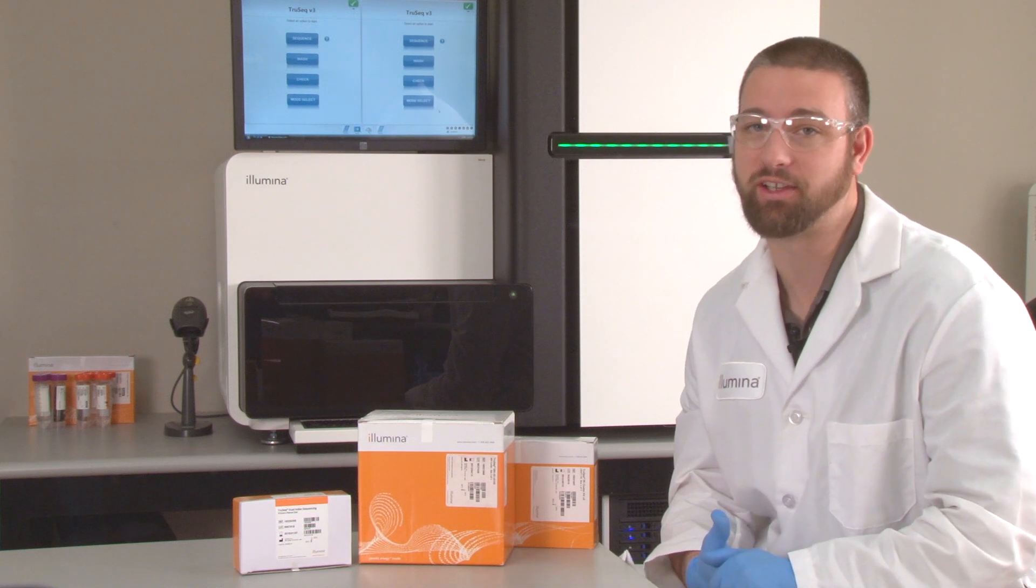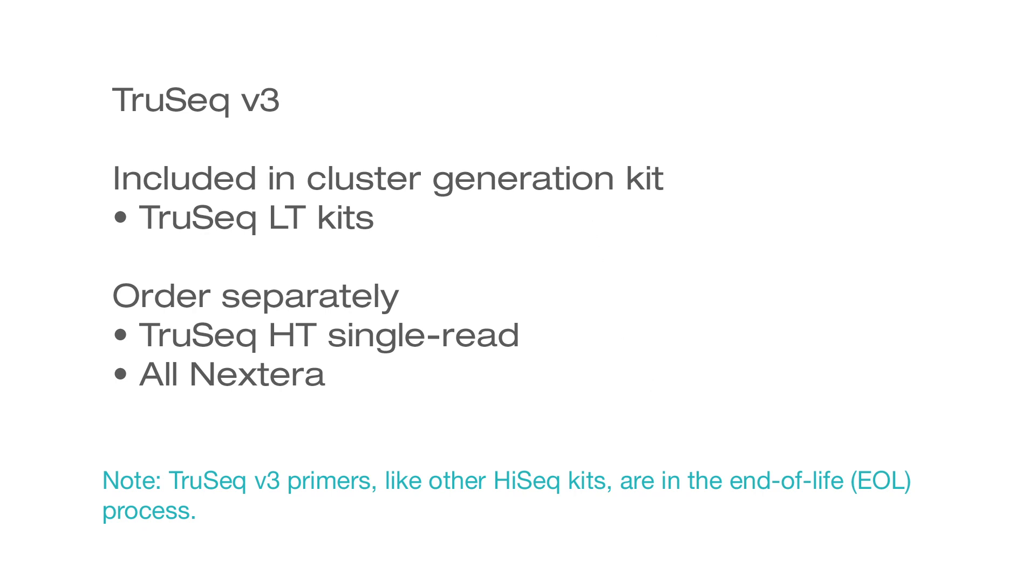For earlier cluster generation kit versions, such as TruSeq V3, only indexing primers compatible with low-throughput, LT, TruSeq kits are included in the cluster generation kits, both for single-read and paired-end varieties.